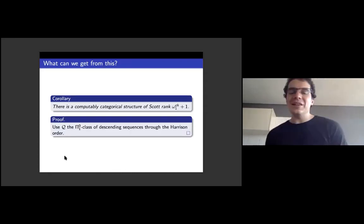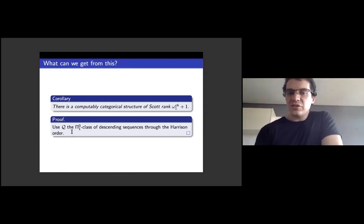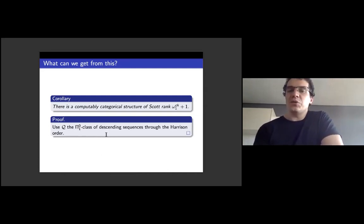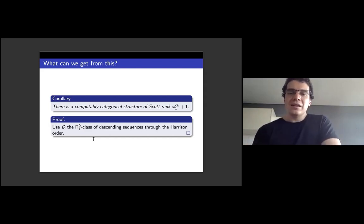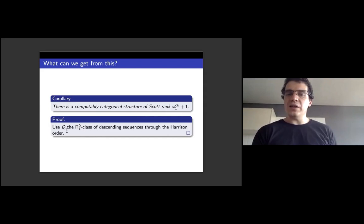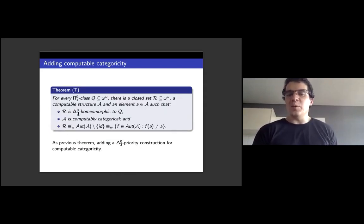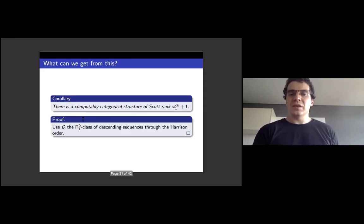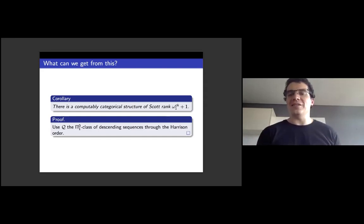What can this get us? For example, there's a computably categorical structure of maximal Scott rank. Start with a non-empty Pi-0-1 class with no delta-1-1 elements — for example, the descending sequences through a Harrison ordering. By standard Scott analysis, having Scott rank less than maximal is equivalent to the hyperarithmetic automorphisms being dense in the space of all automorphisms. If Q has no hyperarithmetic elements, then R — being arithmetically homeomorphic to Q — also has no hyperarithmetic elements. So the non-trivial automorphisms of the structure have no hyperarithmetic ones, meaning hyperarithmetic automorphisms are not dense, giving us maximal Scott rank.